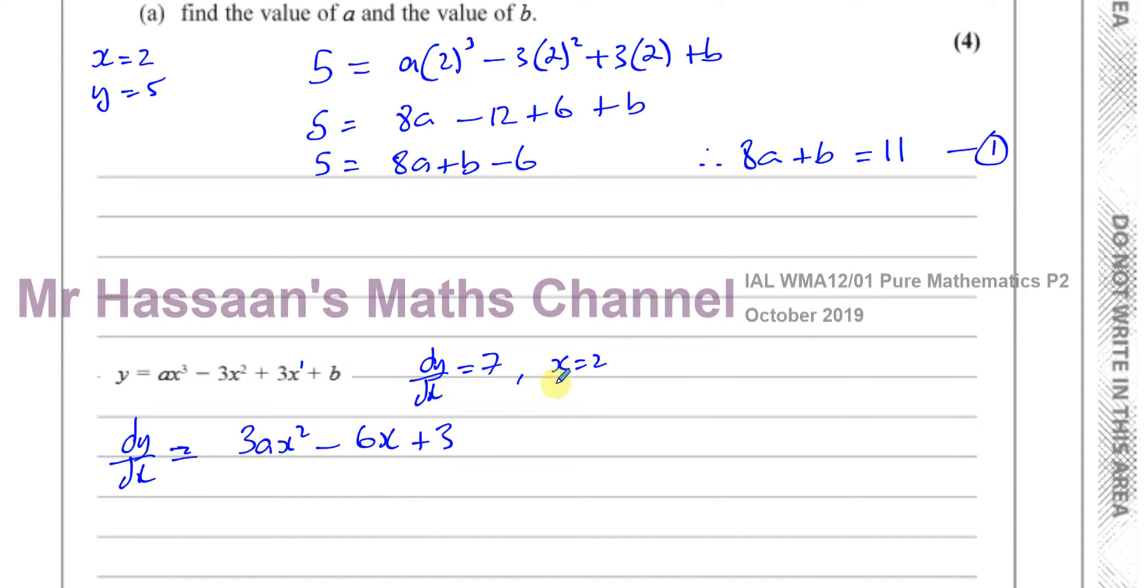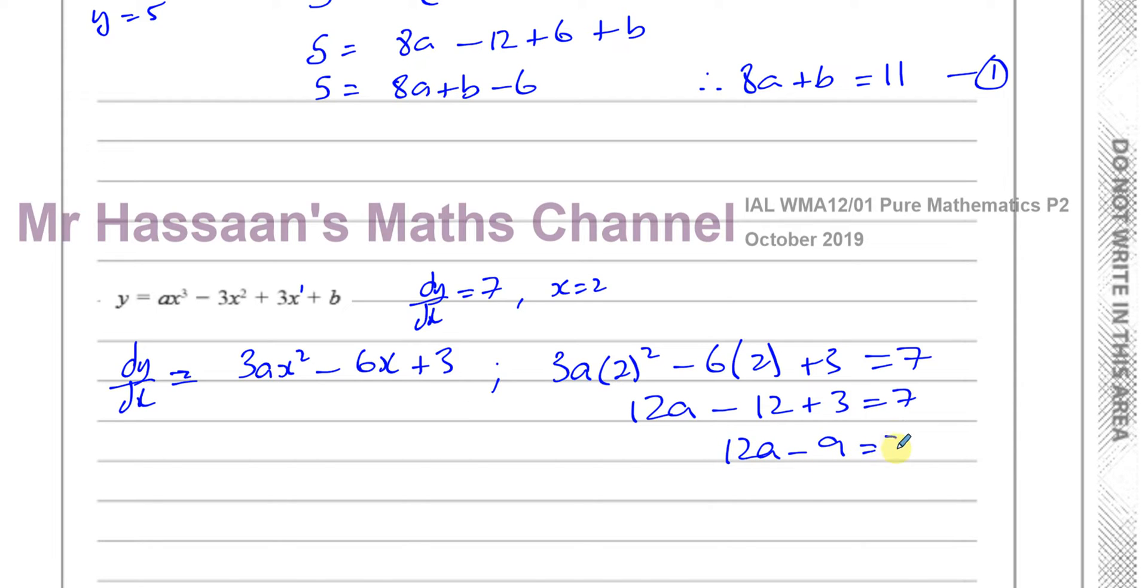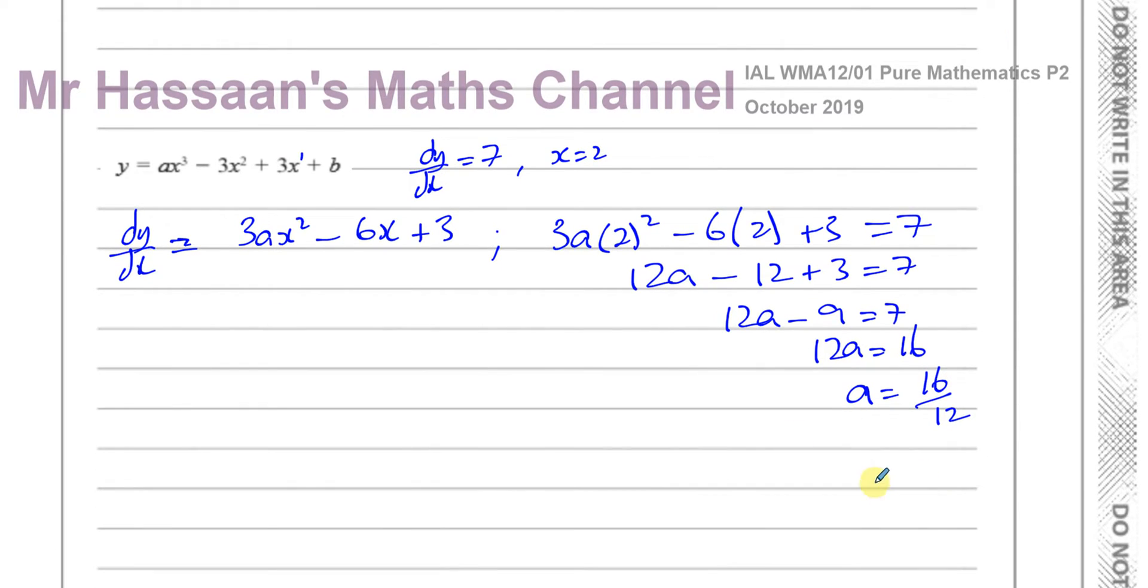So it looks like we're going to find A straightaway. We know that when X equals 2, dy/dx equals 7. So therefore, we can say that 3A times 2 squared minus 6 times 2 plus 3 has to equal 7. That's going to give us 12A minus 9 equals 7. Add 9 to both sides. 12A is equal to 16. Therefore, A is equal to 16 over 12. So therefore, we can simplify that. Divide by 4. So you can say 4 over 3.